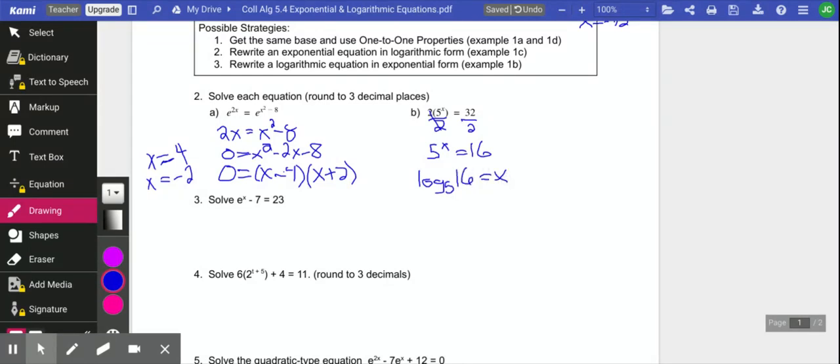That's the same thing as 5 to the x equals 16. Now, I can't put that in my calculator, but we talked about the change of base formula, so I can use that. So we can just say x is going to be the log of 16 over the log of 5. And we end up with 1.723.